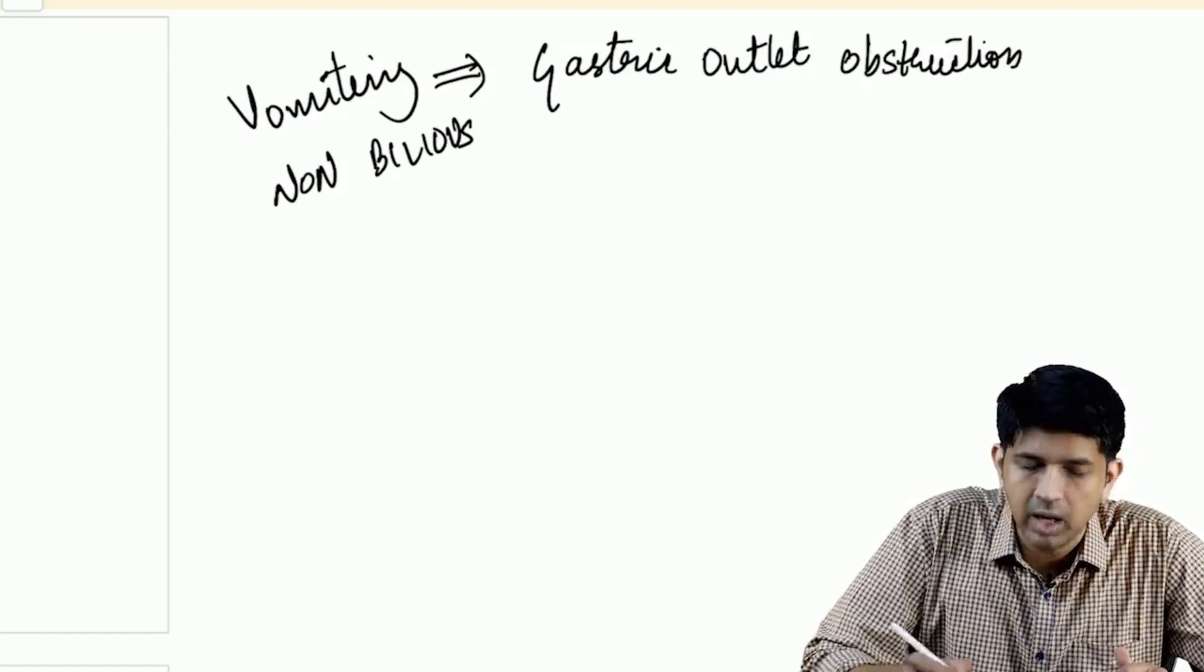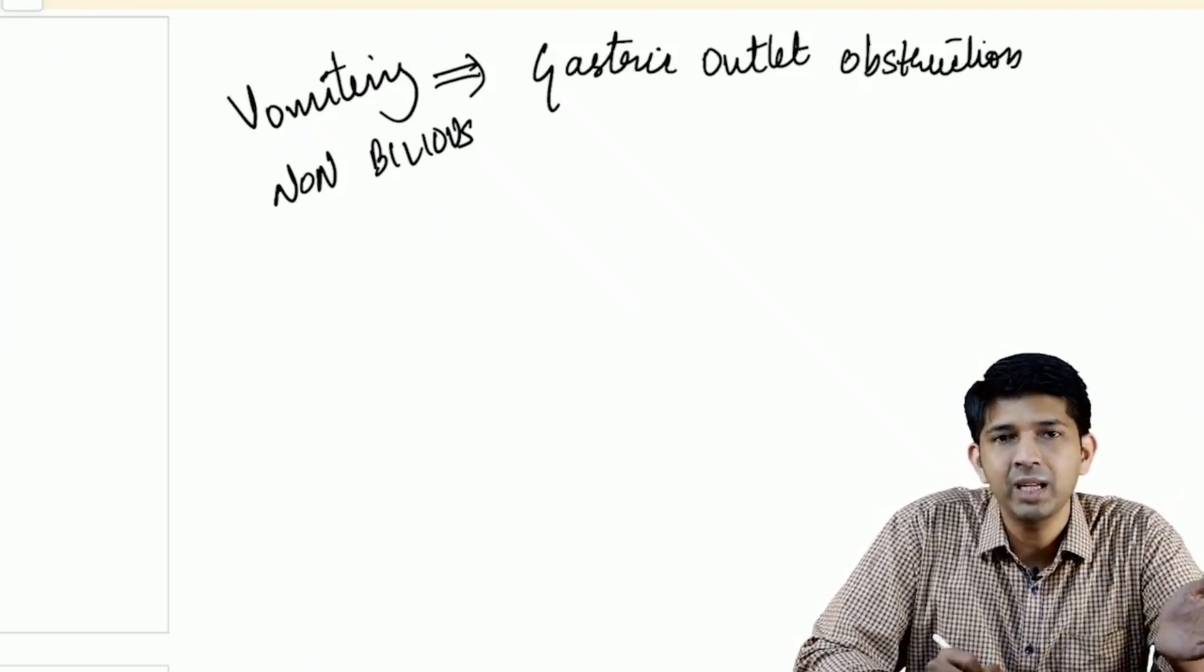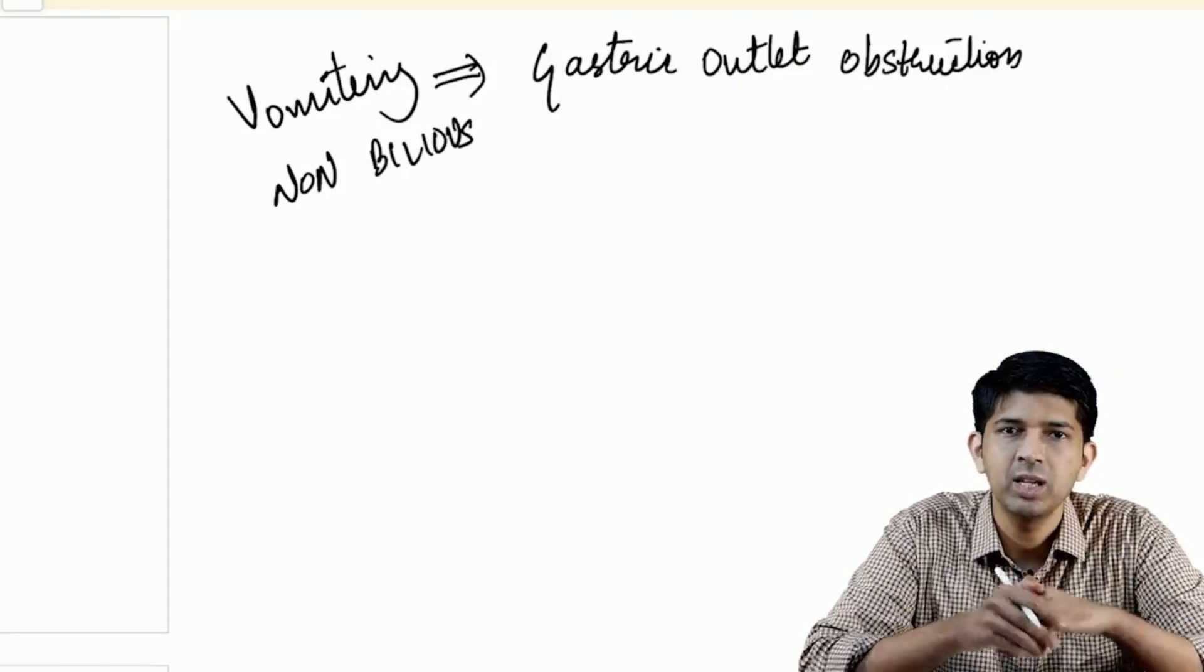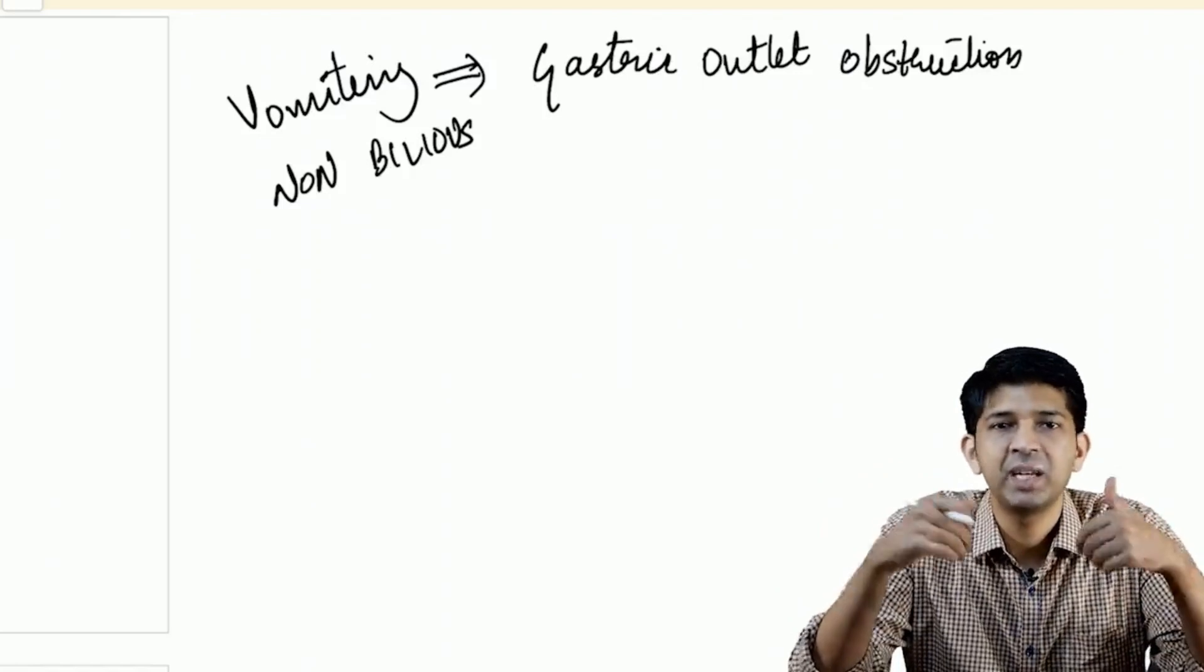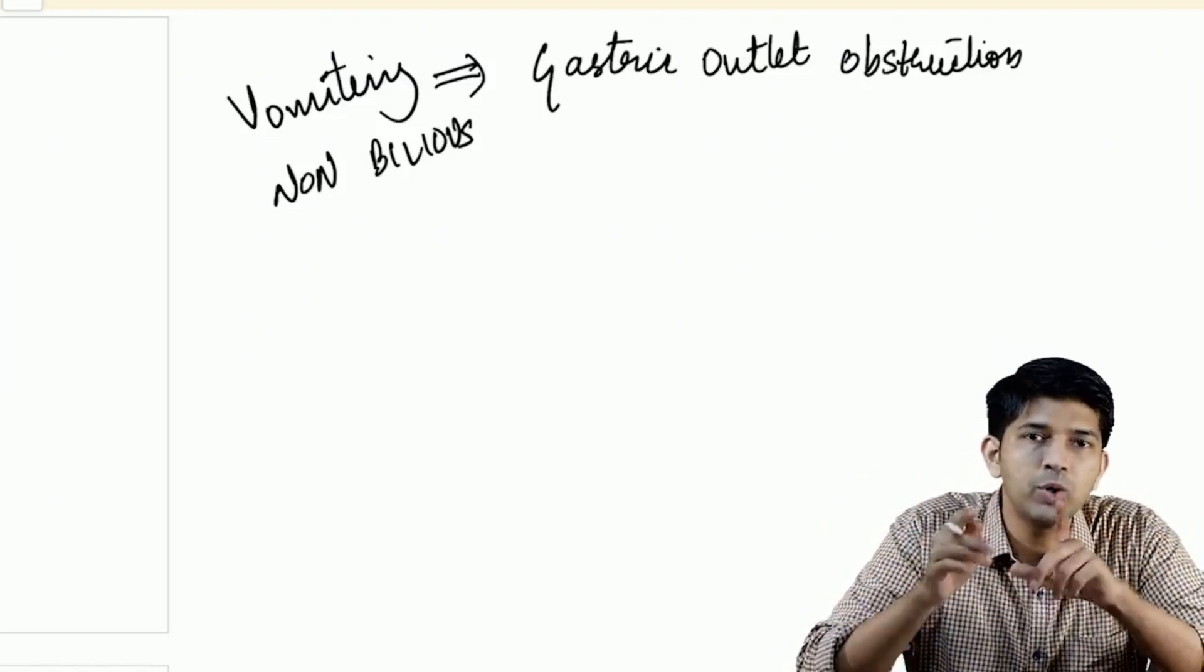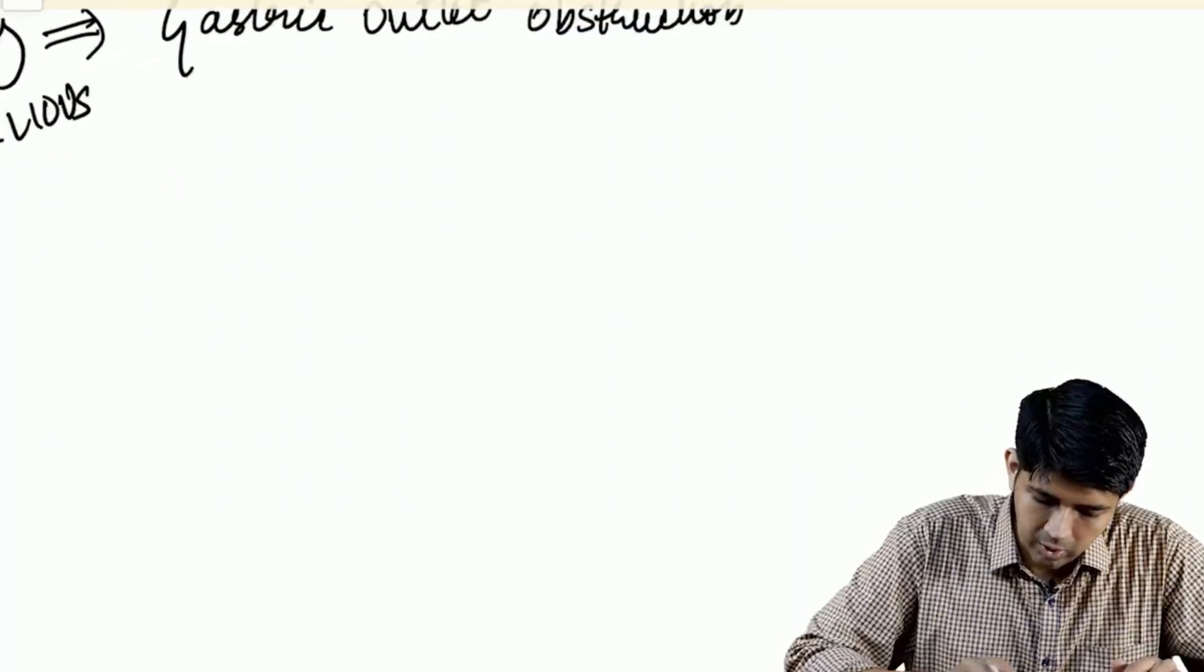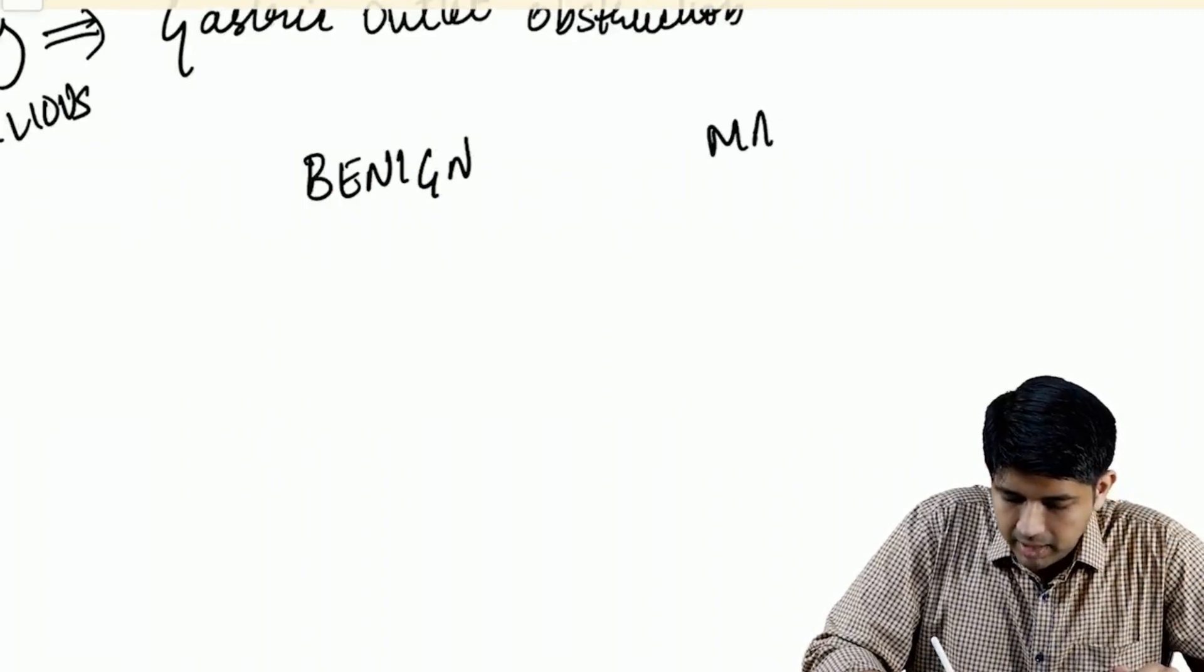The common question they ask you is: how do you differentiate between a benign and a malignant cause of gastric outlet obstruction based on the history of vomiting? Be it benign or malignant, the patient will still have vomiting. How do you differentiate between the two? Let's jot down benign and malignant.